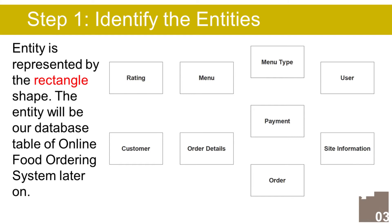In the online food ordering system we have the following entities: 1. User, 2. Site Information, 3. Payment, 4. Order, 5. Order Details, 6. Customer, 7. Rating, 8. Menu, 9. Menu Type.